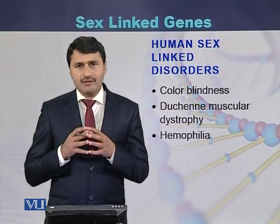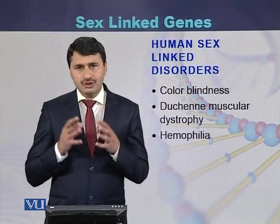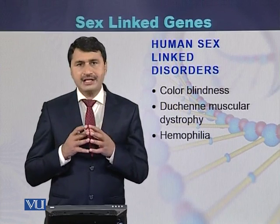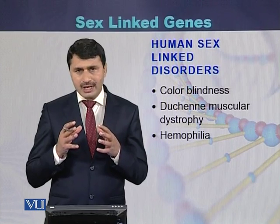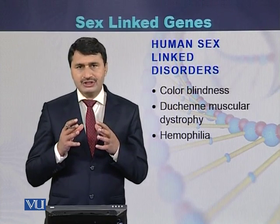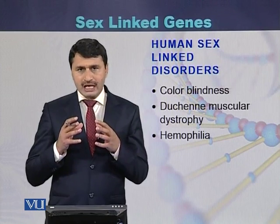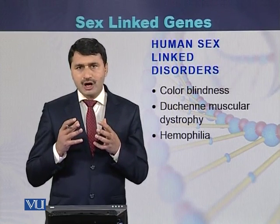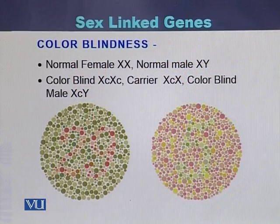The most common examples of sex linked disorders are color blindness, Duchenne muscular dystrophy, and Haemophilia. The genes of these disorders are related to the X chromosome or the sex chromosomes. In humans, color blindness is a disease related to the X chromosome.